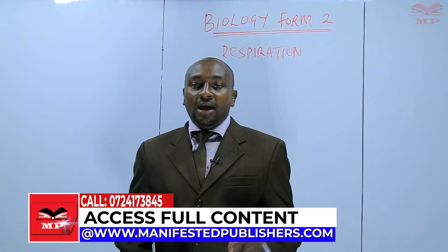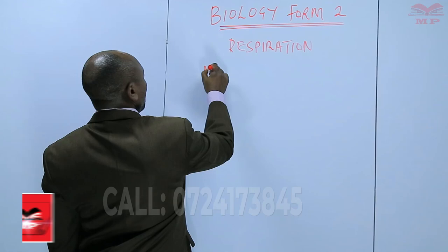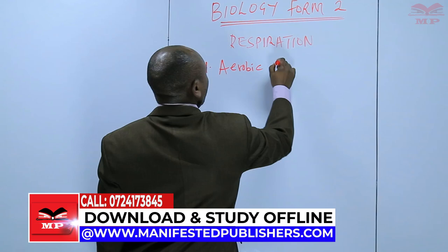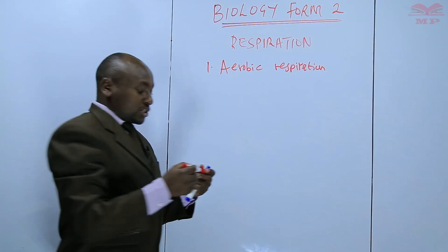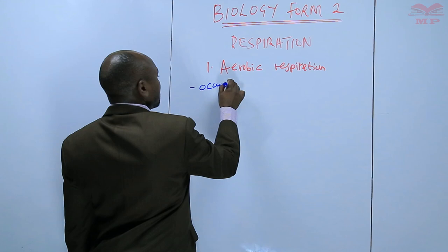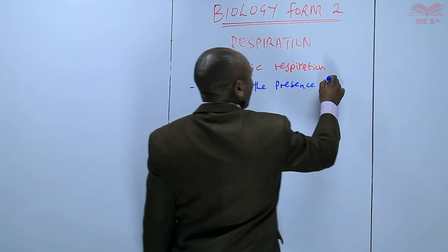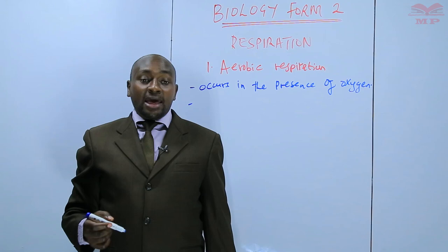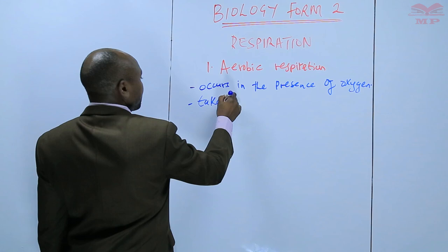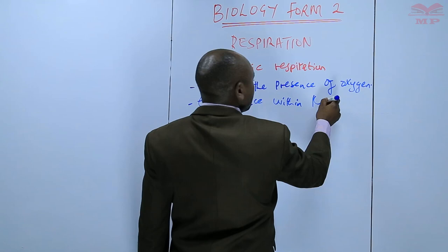Number one of the types of respiration is aerobic respiration. This is the type of respiration that occurs in the presence of oxygen. Another point about aerobic respiration is that it takes place within the cytoplasm and also within the mitochondrion — those two areas.